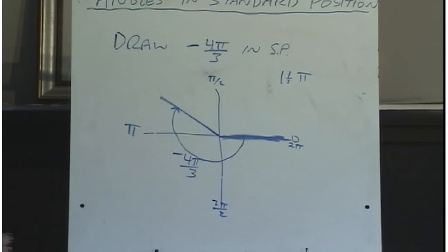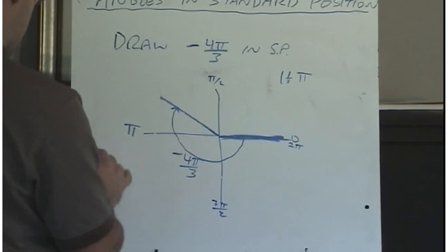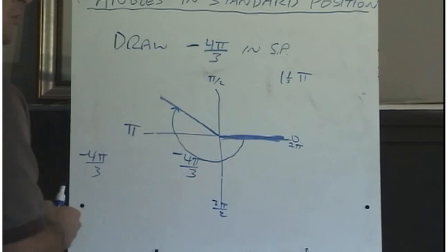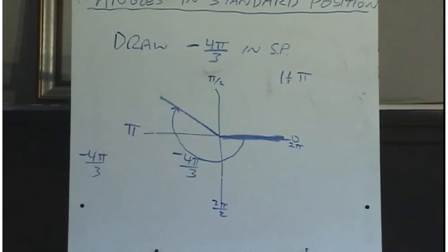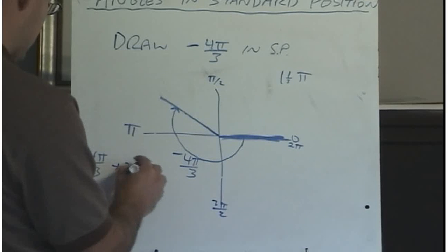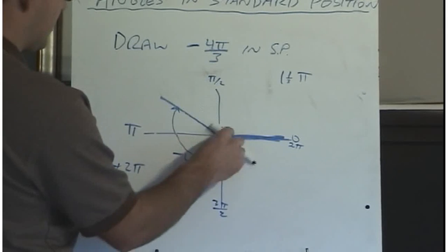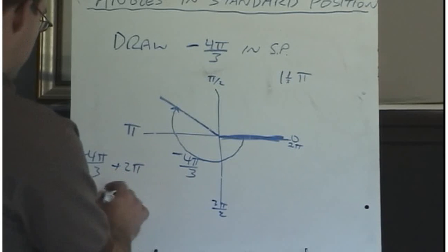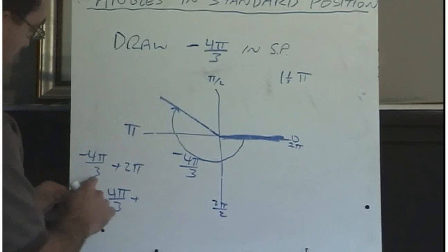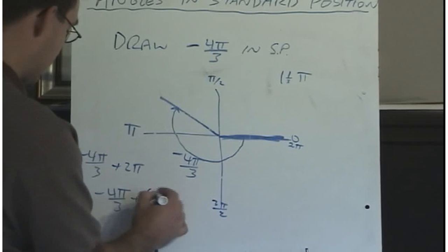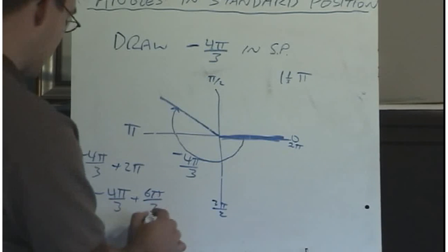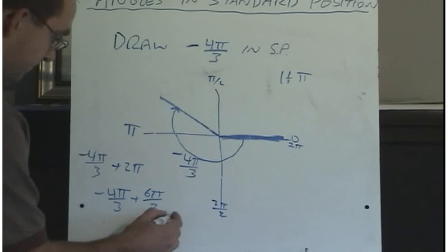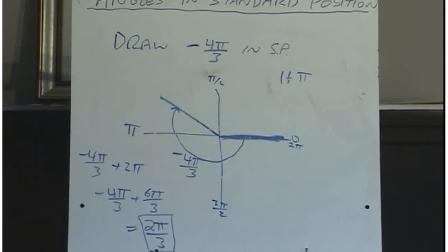If I want to find an angle coterminal with negative 4 pi over 3: when working in radians, one complete circle is 2 pi, so we add or subtract multiples of 2 pi instead of 360. Adding 2 pi: I need common denominators since we have a denominator of 3, so 2 pi becomes 6 pi over 3. Negative 4 pi over 3 plus 6 pi over 3 gives a coterminal angle of 2 pi over 3.